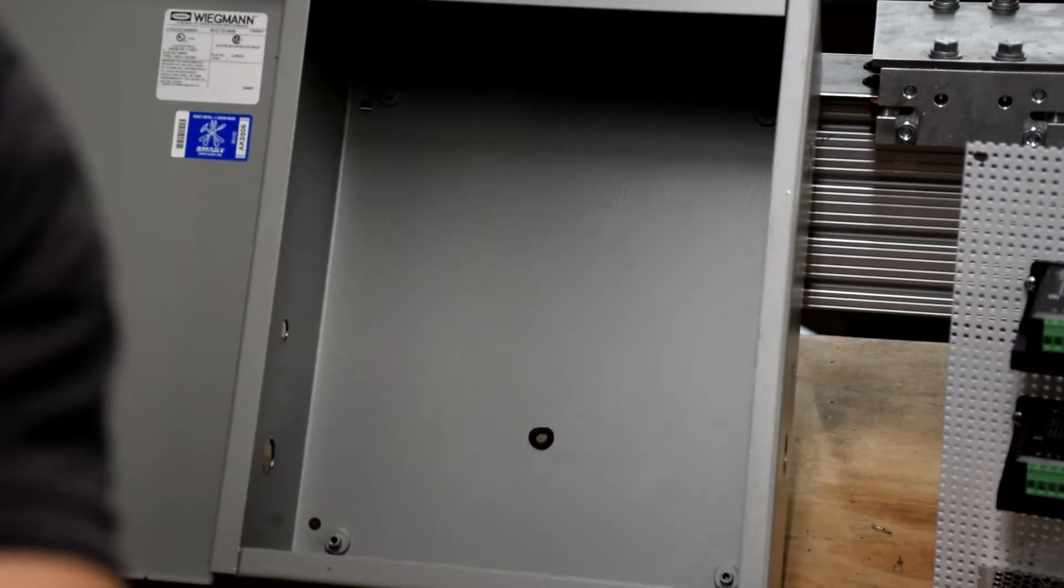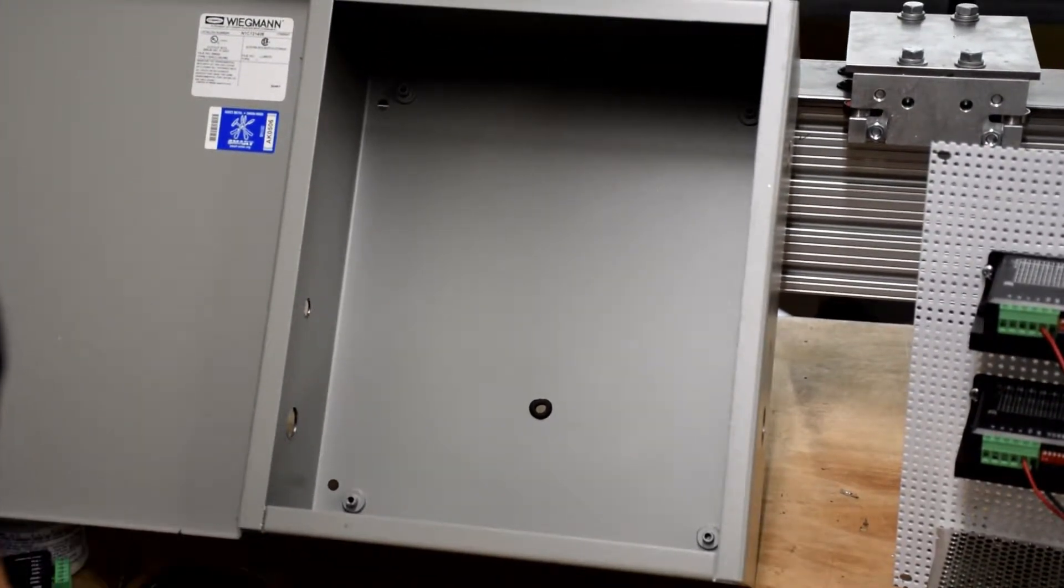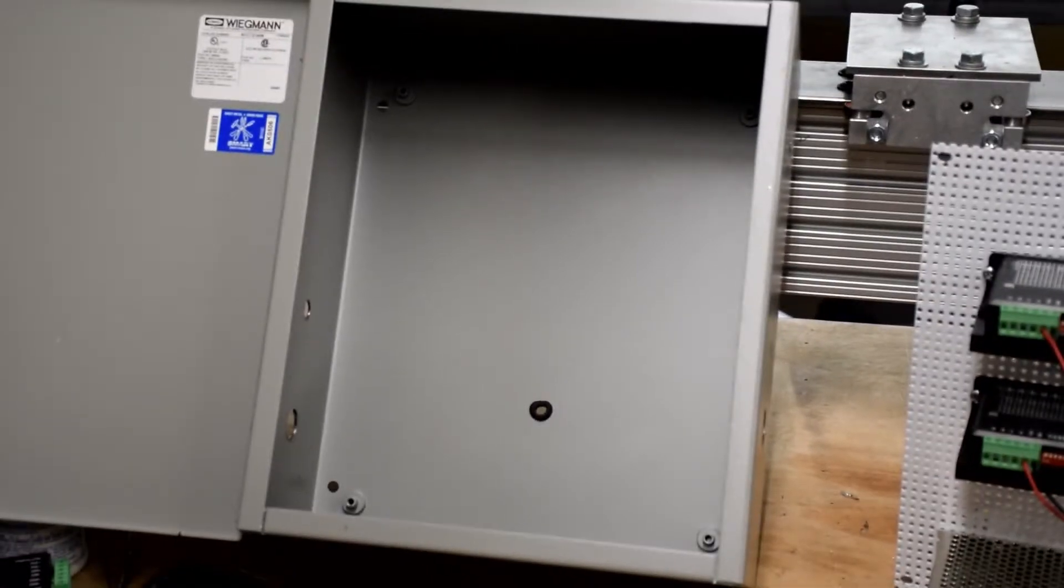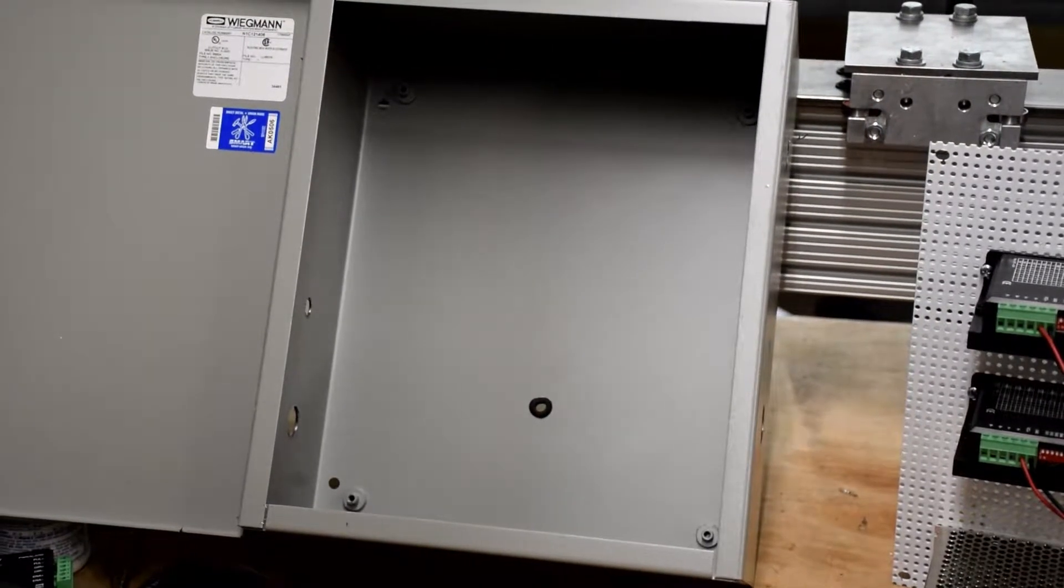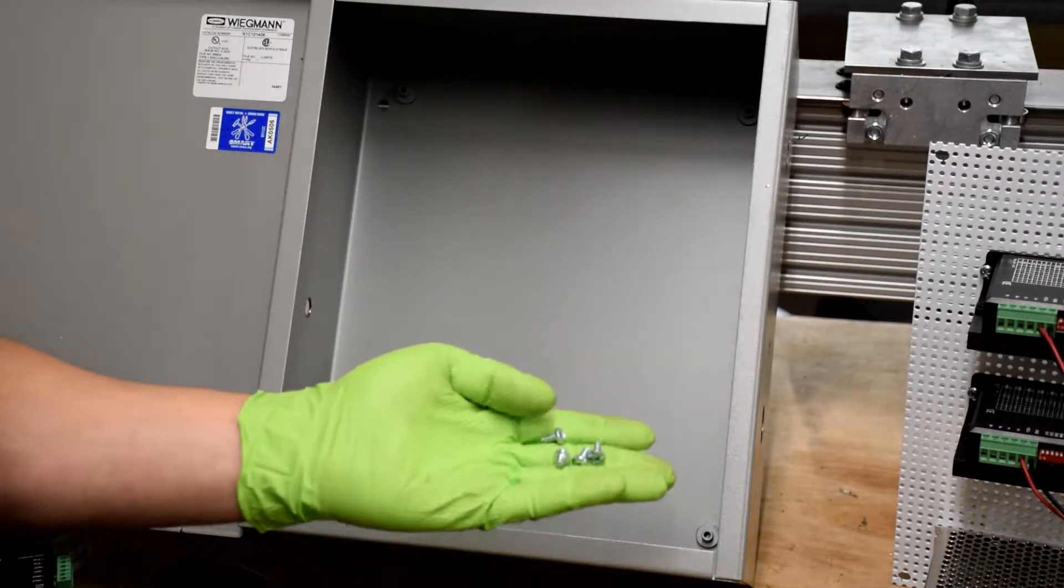Now we can mount the backplate into the enclosure using the screws that came with the backplate and the enclosure. This is probably best to do lying flat horizontally on the table, but I've got it propped up to show you what it looks like.